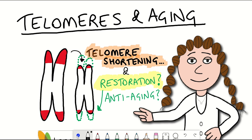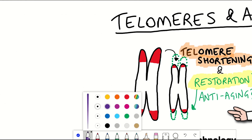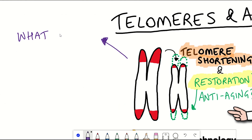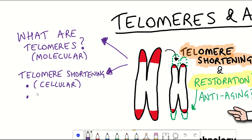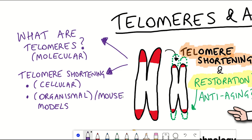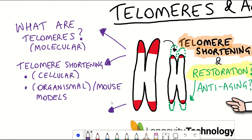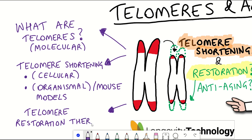We'll begin by looking at what telomeres are in terms of their molecular underpinnings, then look at the implications of telomere shortening at the cellular level, extend this to the organismal level with mouse models, look at the current evidence linking telomere shortening to ageing, and finally address whether increasing telomere length could be beneficial and how it could be achieved.